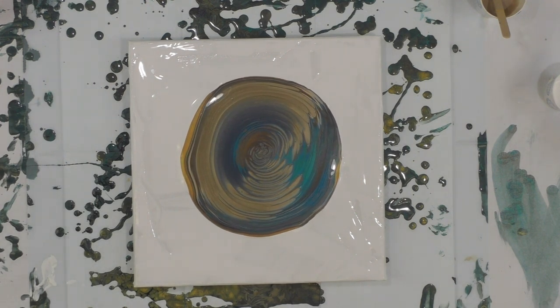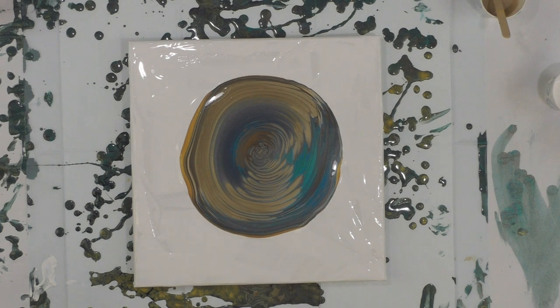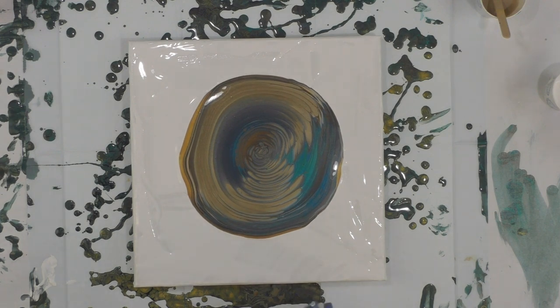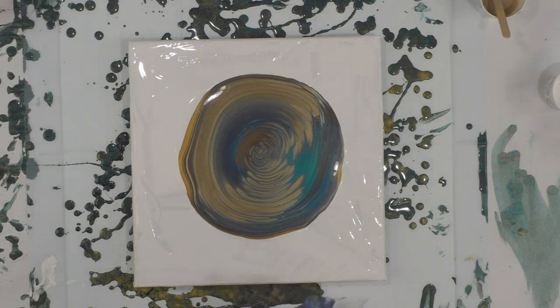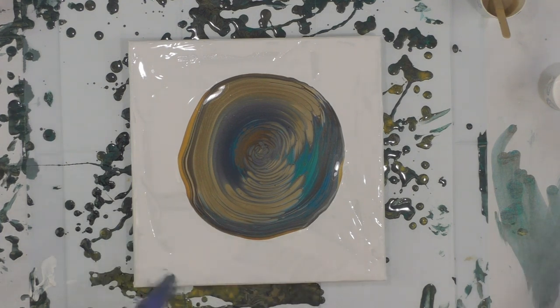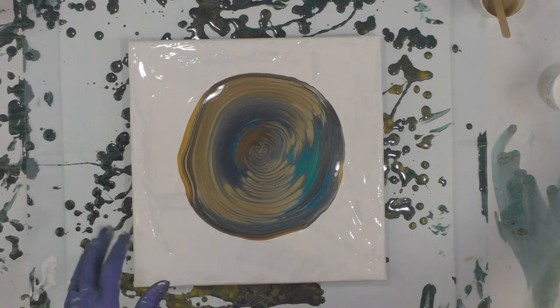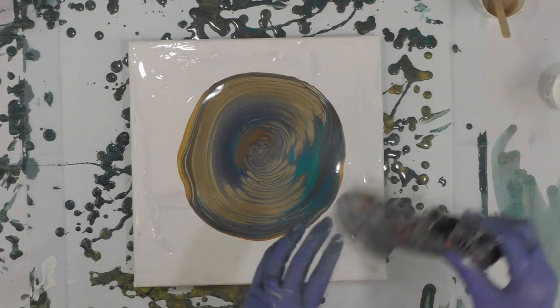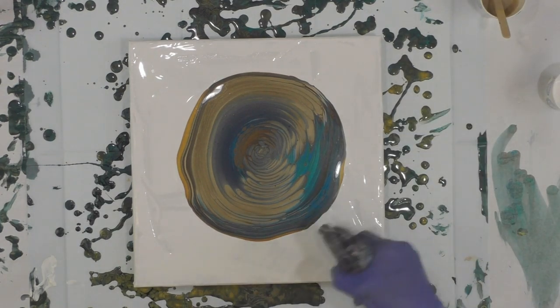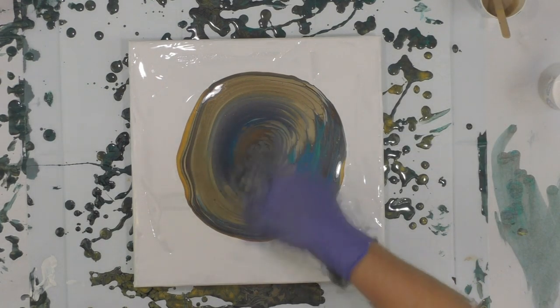I added the DecoArt white satin enamel to one, two, three, four—four of my cups that had colors in it, so it softened the colors a bit. We'll see what happens, and there's a full layer of the white underneath.